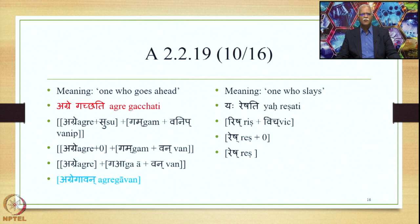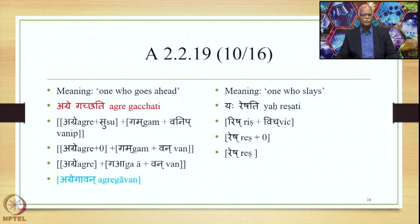Similarly, when the meaning is 'one who slays' (Yaha Reshati), we add the suffix zero (Kvip) and get Risha plus zero, and the finally derived output is Resh. This is not a compound output, but is shown to demonstrate that these suffixes are added both when Upapadas exist and also when Upapadas do not exist.